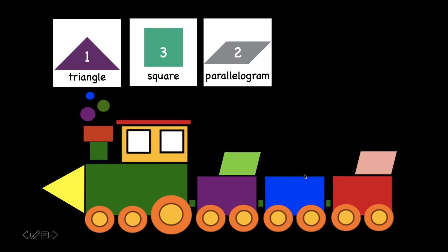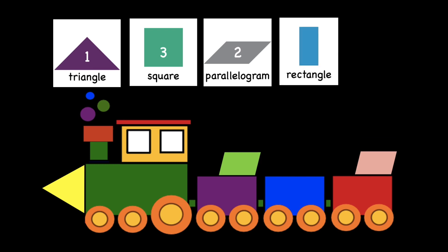Let's take a look at the next shape: Rectangle. How many rectangles are there? I can see a lot. Can you count for me? Are you ready? Let's see the answer: ten. Wow, ten. Can we count together? One, two, three, four, six, eight, nine, ten. Correct. There are ten rectangles altogether. Very good.